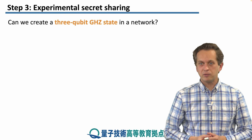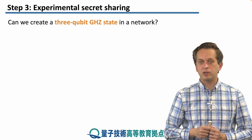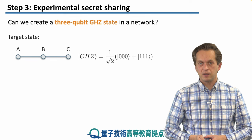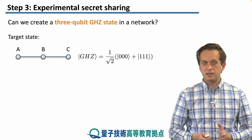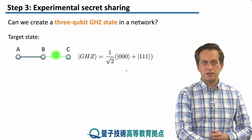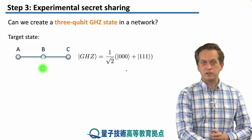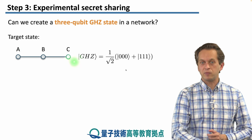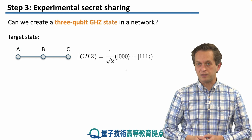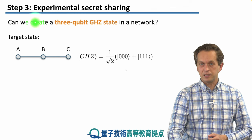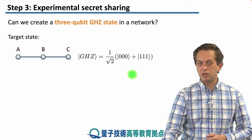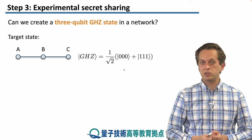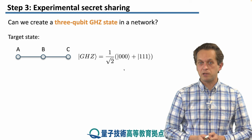The question we want to start with is: how can we create a 3-qubit GHZ state in a network? This is our target state. We represent it by drawing vertices for every qubit and connecting them with edges representing that they are entangled. A GHZ state for 3 qubits is an equal superposition of 3 zeros and 3 ones.